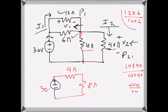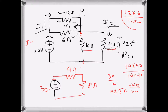Now I know the source current: it will be 30 over 12, which is 2.5 amps. So the source current I is equal to 2.5 amps.